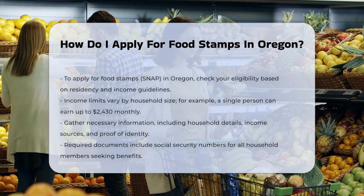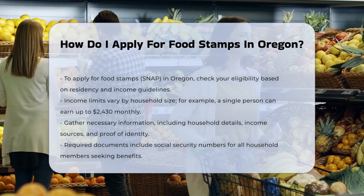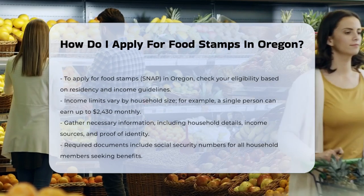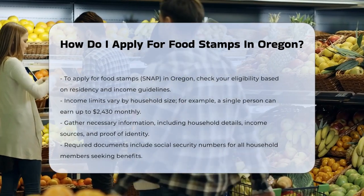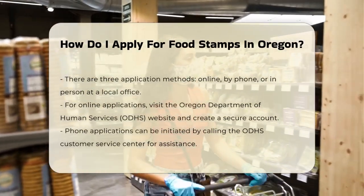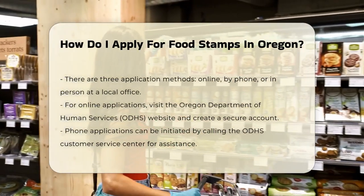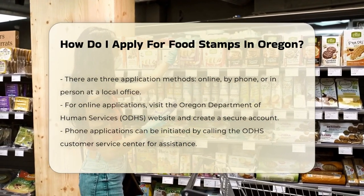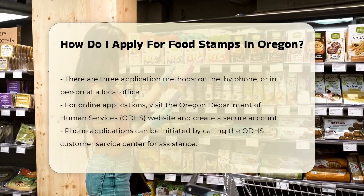Gathering required information: before applying, gather all necessary information, including details about everyone who lives with you and shares food, as well as income information from all sources, such as work, social security, unemployment insurance, and child support. You will also need proof of identity, proof of income, and social security numbers for everyone in the household who wants benefits.